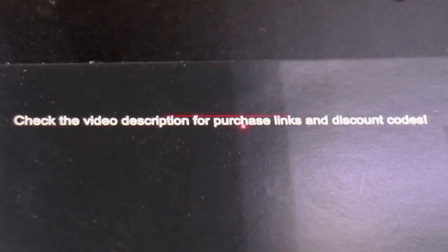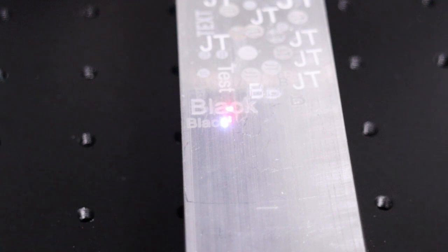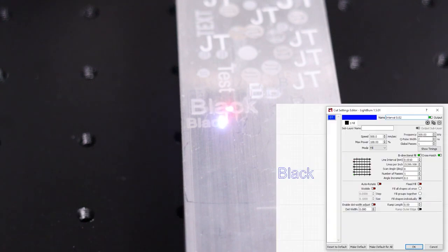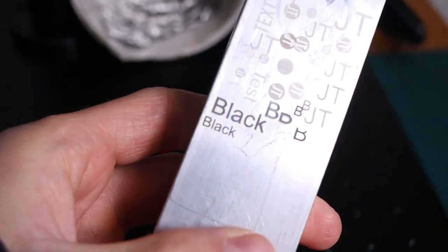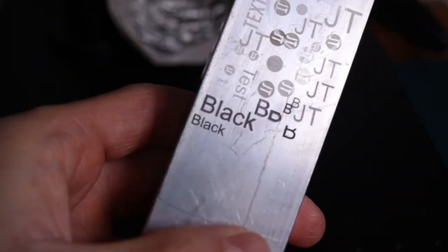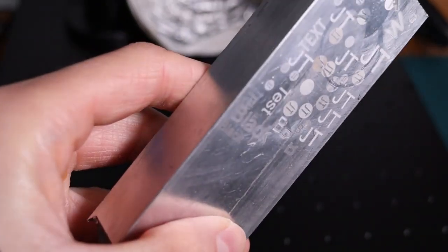In the video description, I will include a link to all the test files I used here. It is important to mention that producing black engravings on raw aluminum is much more difficult without applying certain chemicals or coatings. Engravings appear black only at certain angles.